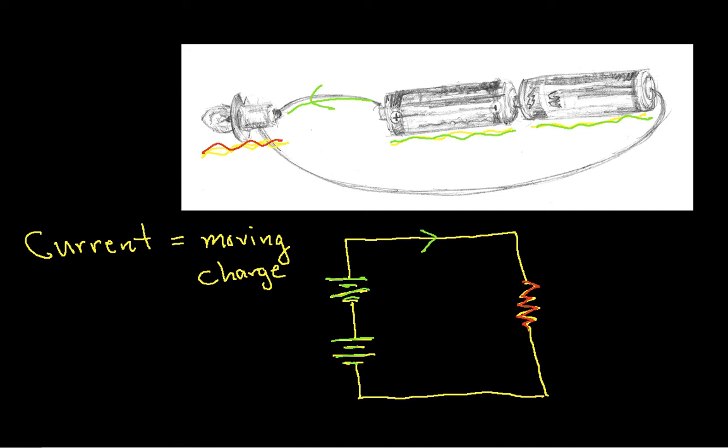We measure current in units of amperes. An ampere is one coulomb of charge per second. As engineers we often abbreviate this as an amp, but amp is short for ampere. So basically, current is the amount of charge flowing per second.